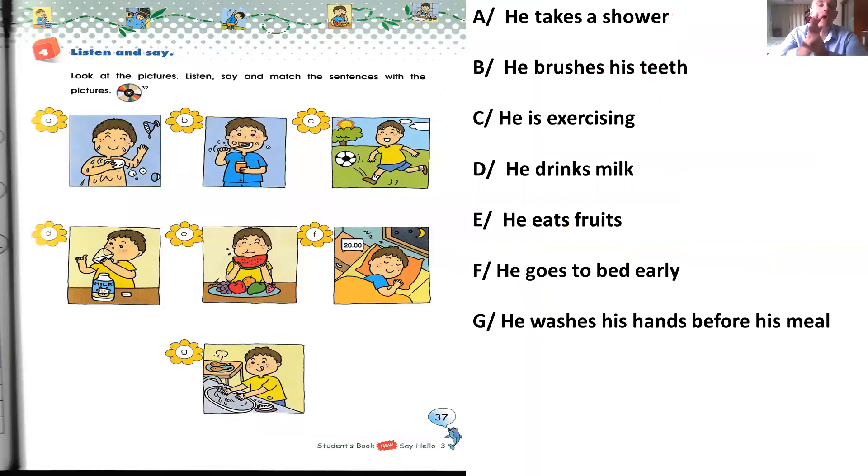Let's go. First, letter A, he takes a shower. B, he brushes his teeth. C, he is exercising. D, he drinks milk. E, he eats fruits. F, he goes to bed early. G, he washes his hands before his meal. Take a look at these pictures and repeat these sentences.